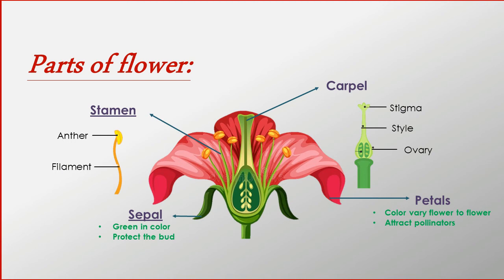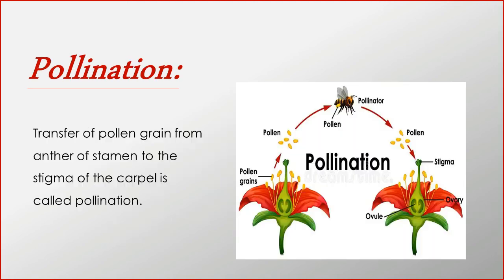Stigma receives the pollen grain during pollination. Pollination is the process of transferring the pollen grain from the anther of the stamen to the stigma of the carpel.